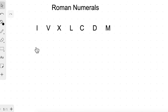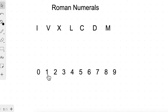These are the seven letters we have, and we can use only these letters to write in Roman numerals. Children, do you know how many different symbols we have in the Hindu-Arabic system? In the Hindu-Arabic system, we have 10 symbols: 0, 1, 2, 3, 4, 5, 6, 7, 8, and 9. We can write any number using these digits.